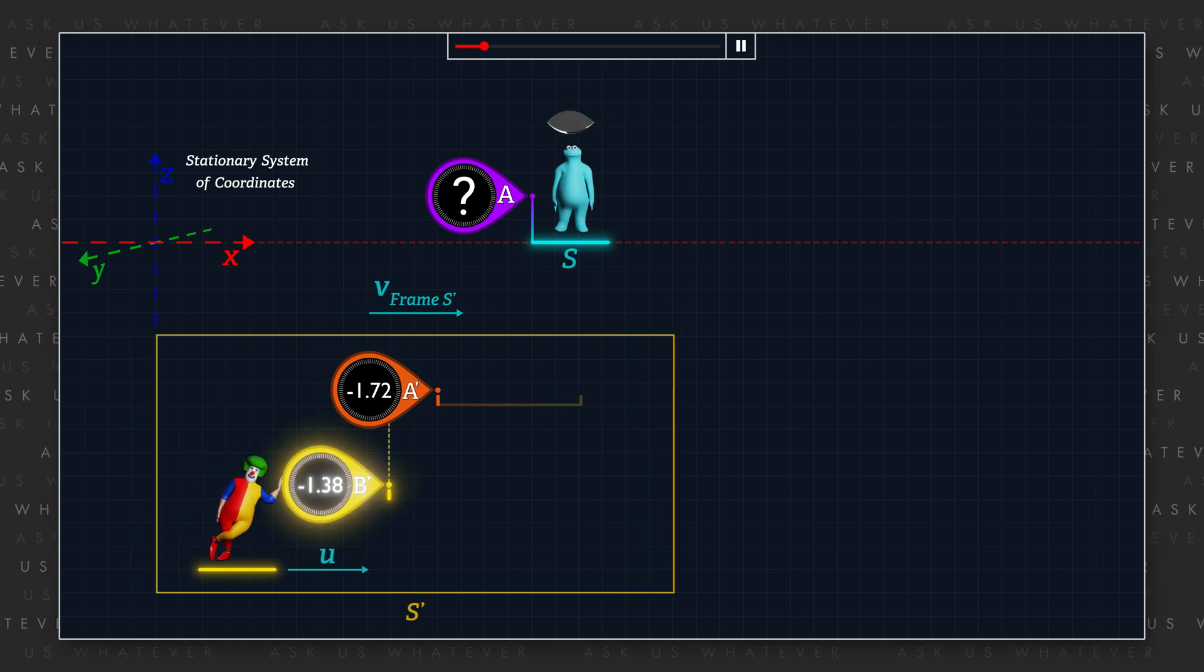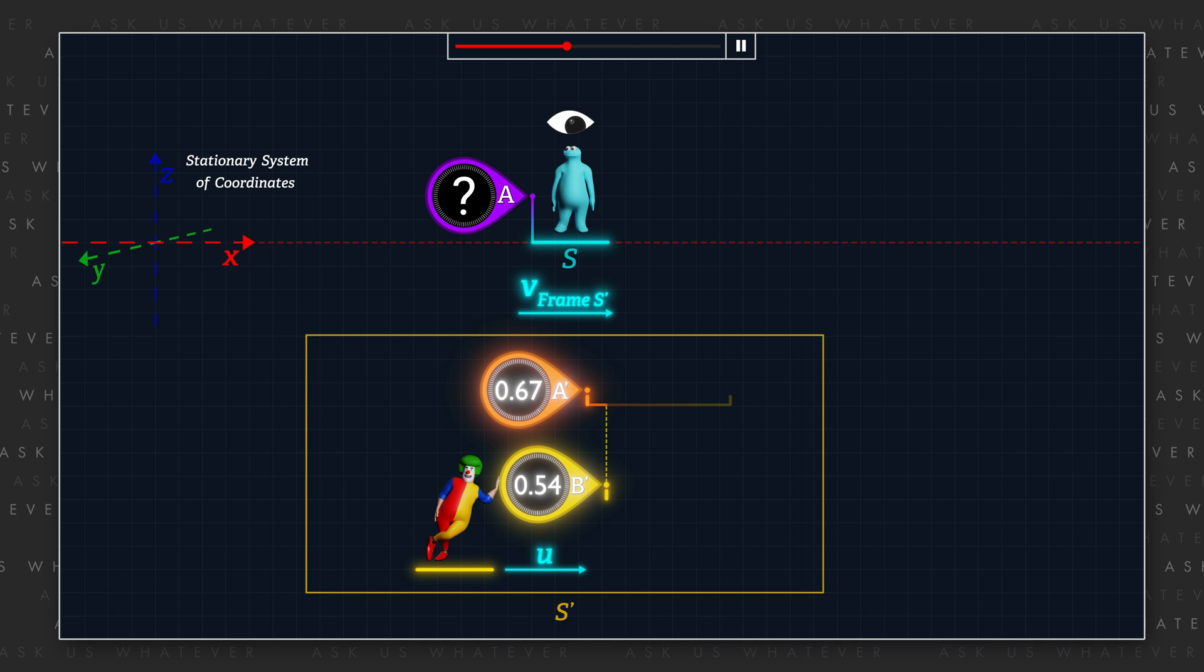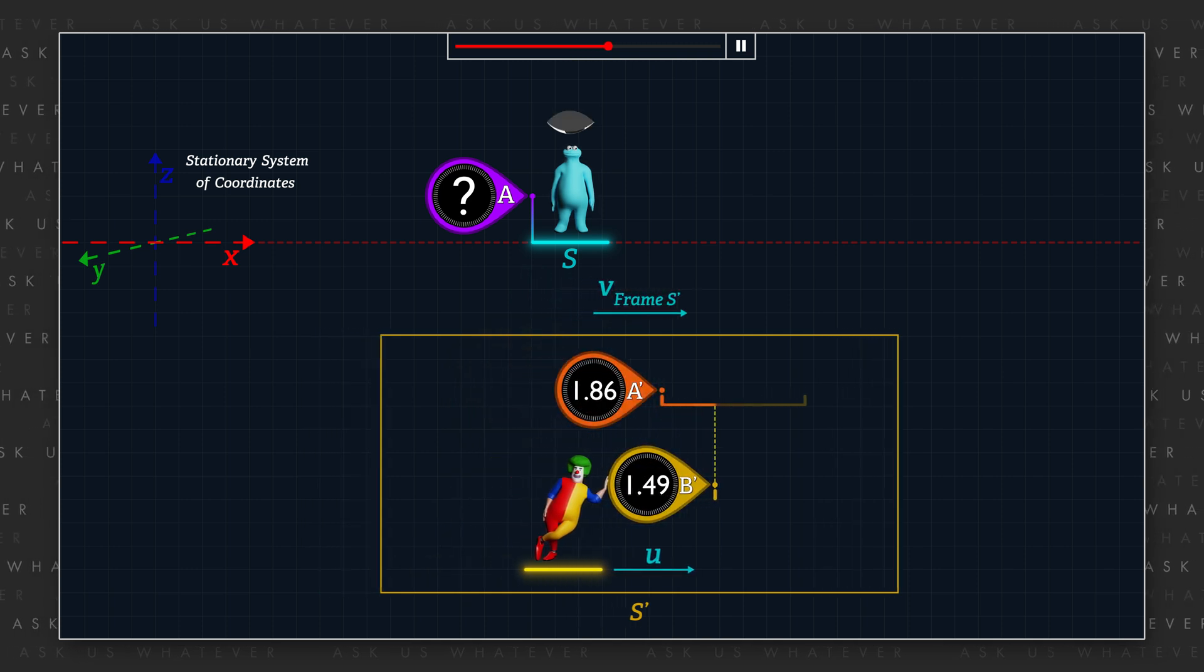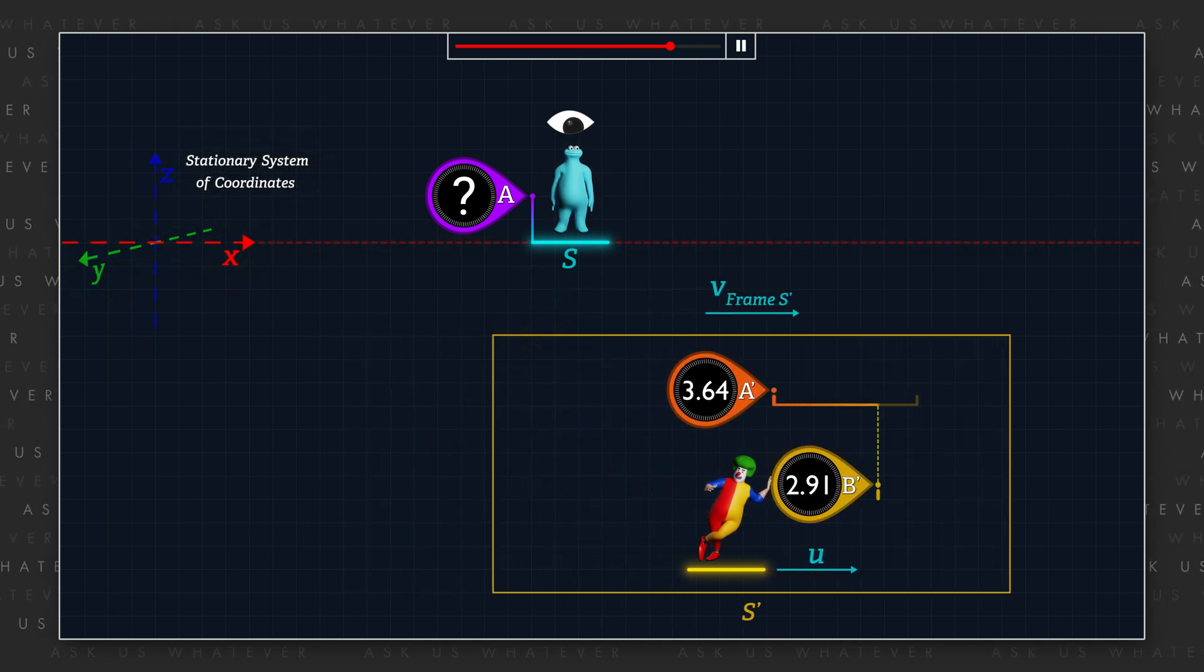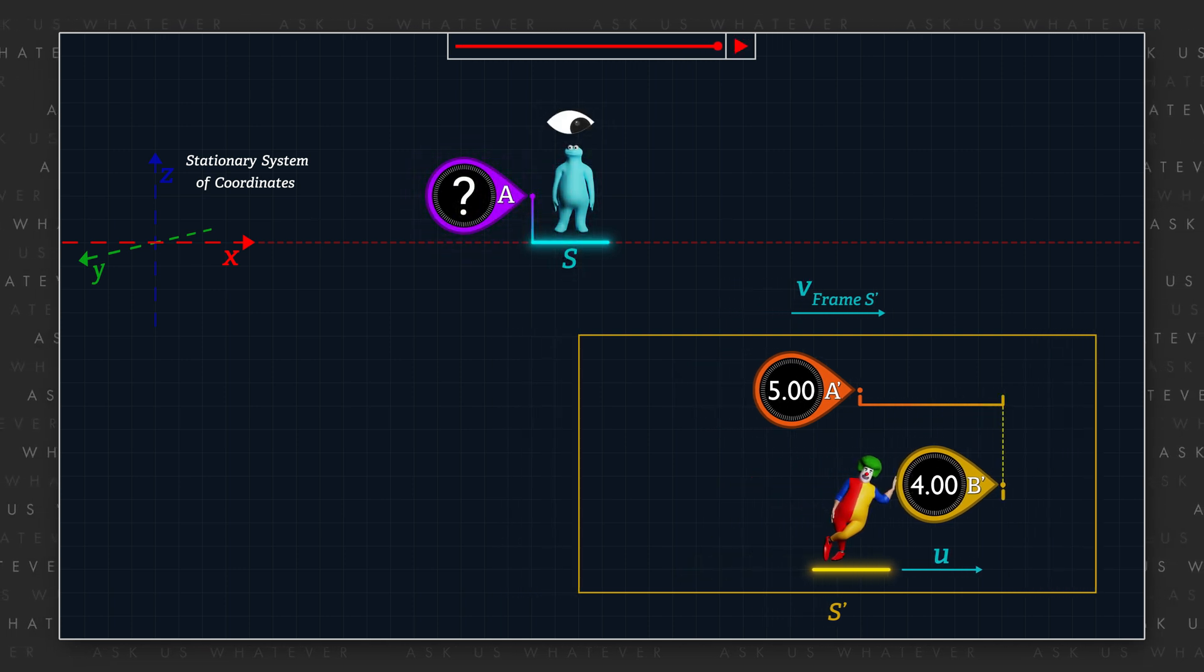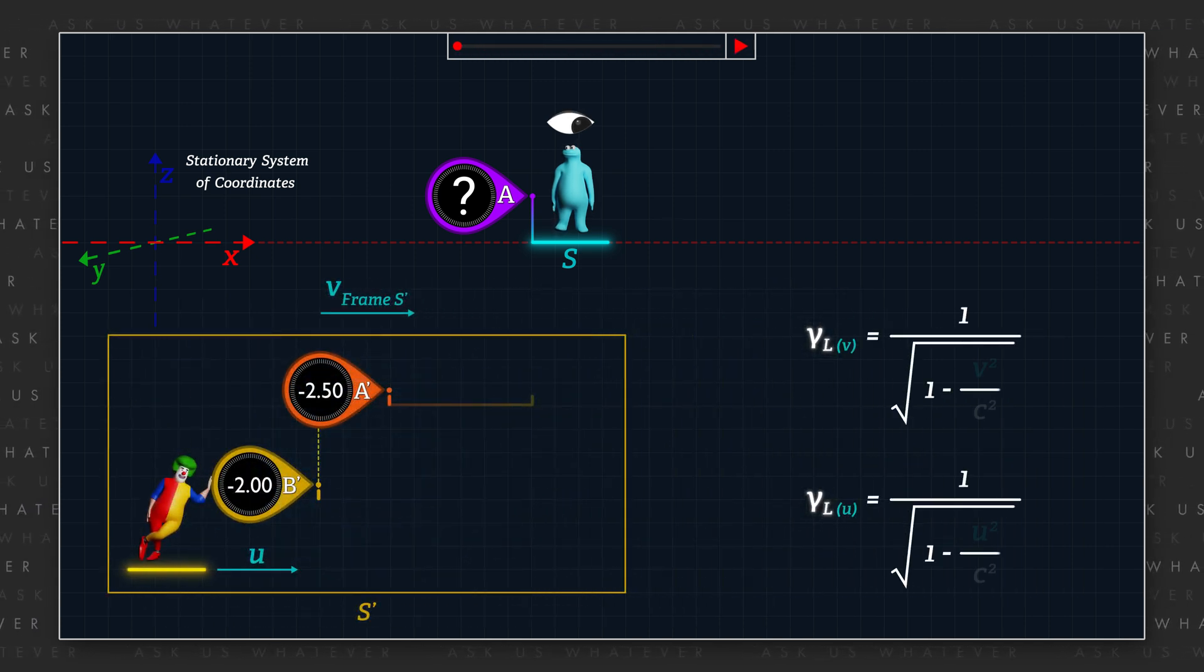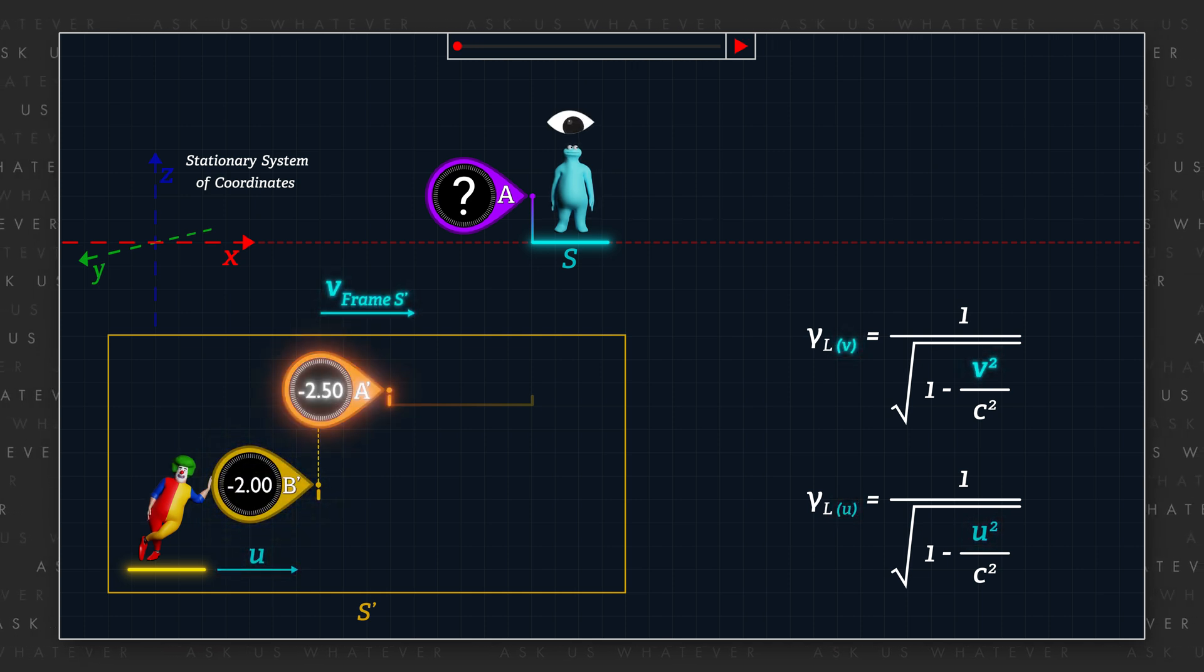Picture two clocks B' and A' moving through space at speeds U and V respectively, in reference to a chosen stationary system of coordinates associated with frame S. According to special relativity, each clock's tempo will be slowed by the Lorentz Gamma factor computed at either speed U for clock B' or speed V for clock A'.